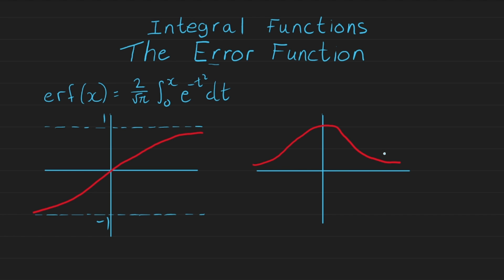When we want to determine the probability that a certain error will fall around a certain value or in a certain range, we integrate this Gaussian function and get the error function, which then tells us the probability that a certain error will fall in a certain range.